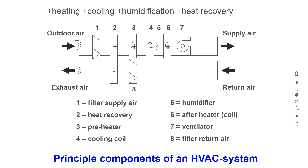The principal components of an air handling unit for an advanced air conditioning system are shown here. Next to those components, a complete HVAC system can contain dehumidification, ducts, sound attenuators, control systems, supply and exhaust grills, and locally controlled after-heating and cooling devices.